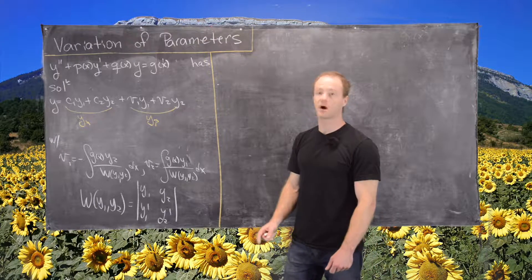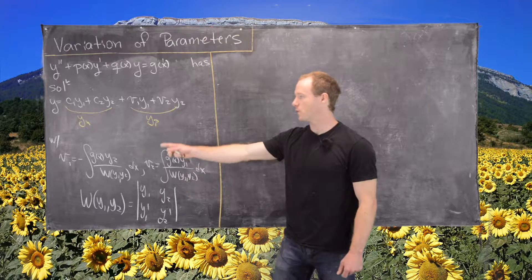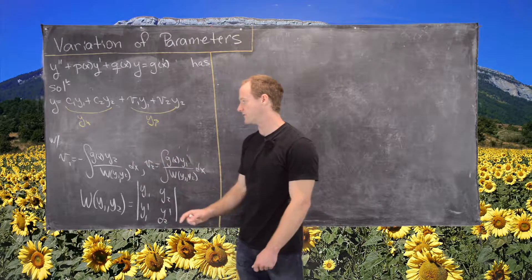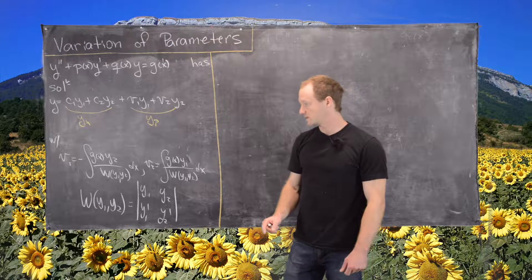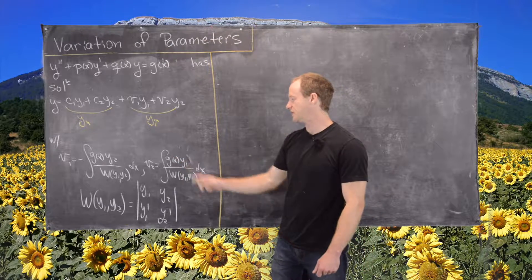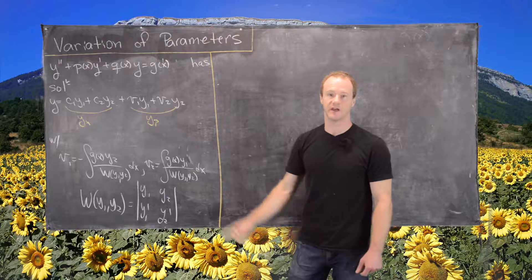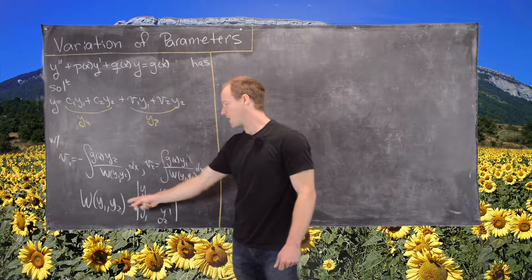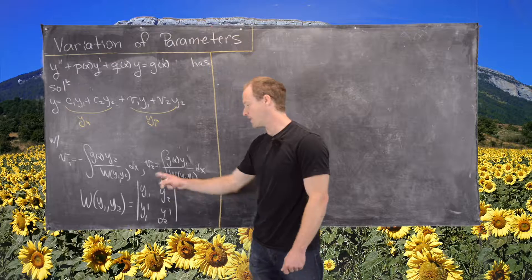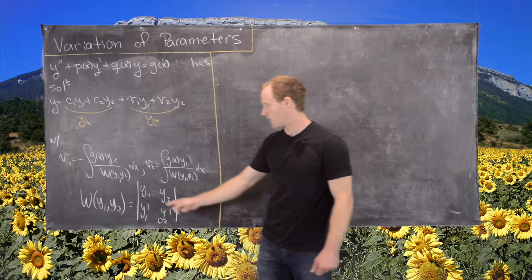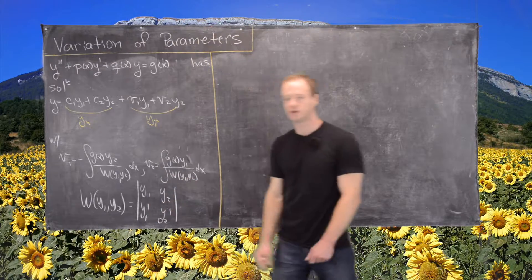v1 and v2 are functions given by the following: v1 is the negative antiderivative of g of x times y2 over the Wronskian, and v2 is the antiderivative of g of x times y1 over the Wronskian. As a reminder, the Wronskian of y1 and y2 is the determinant of the matrix read column-wise: y1, y1 prime, y2, y2 prime.